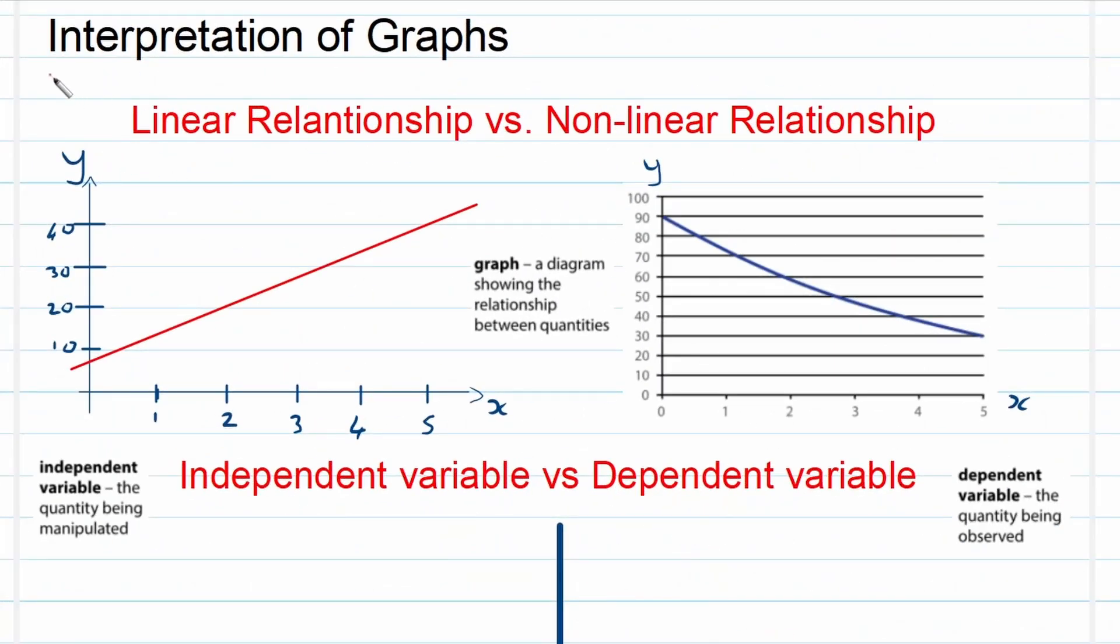Good day fellow problem solvers. We're continuing this chapter on graphs, this interpretation of graphs. This is our very first session, so let's look at it straight away. First of all, let's look at a few terminologies: linear relationship versus non-linear relationship. If you think carefully, it's exactly what it says: is there a linear relationship between two quantities?